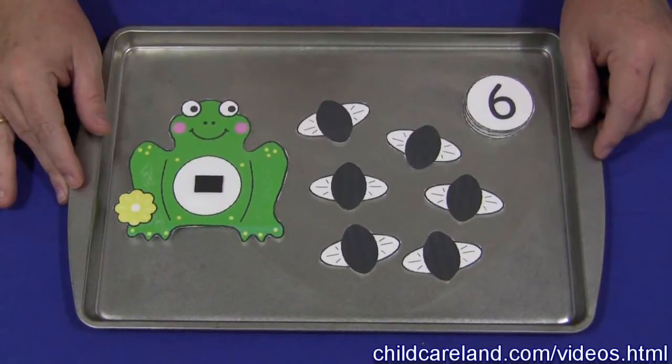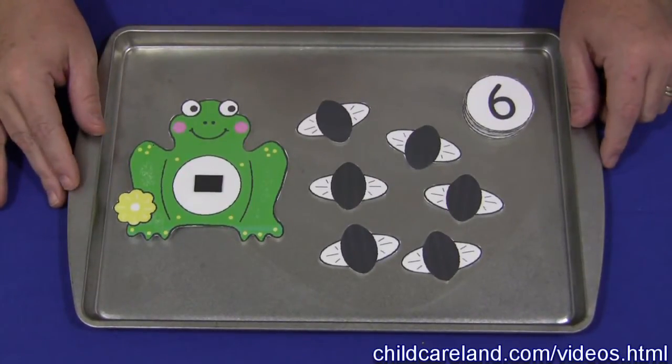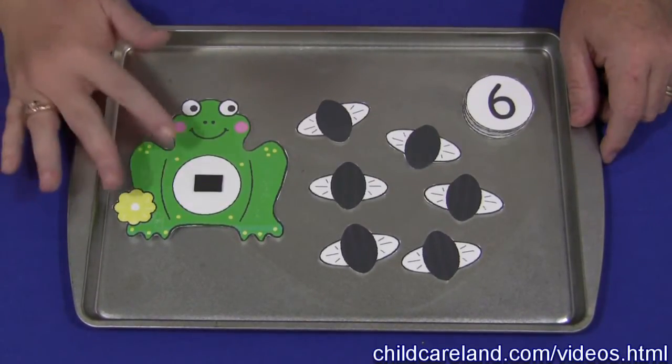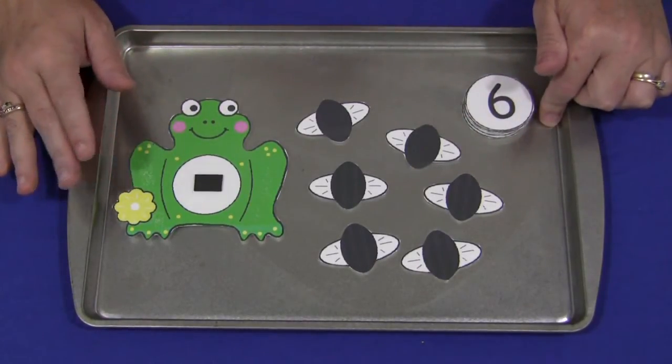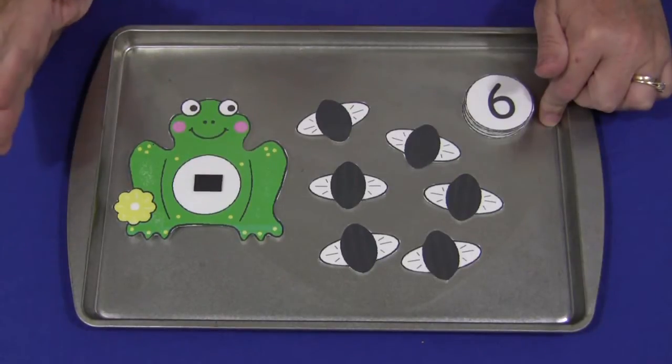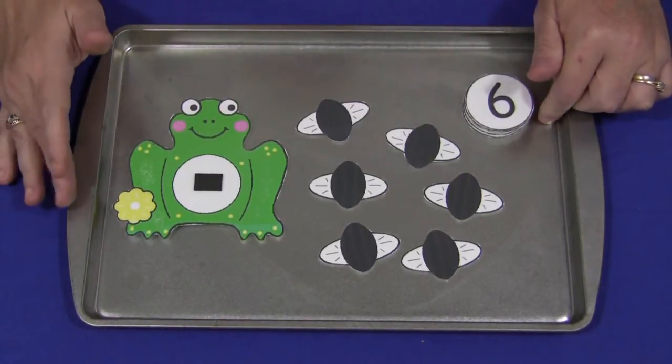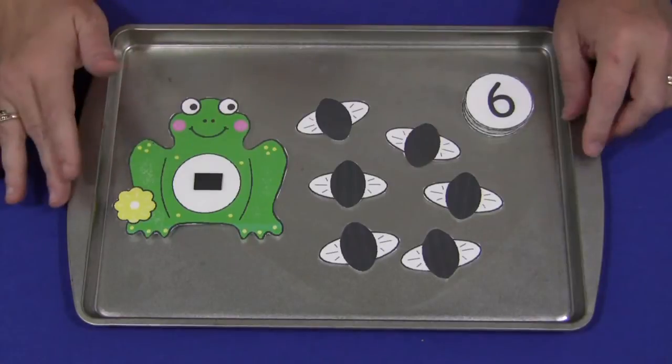You can find these patterns on my website at ChildCareLand.com underneath the video section, and it comes with the frog, the flies, and the number circles. I've also made blank circles if you wanted to write addition or subtraction equations in those circles and use it for that as well.